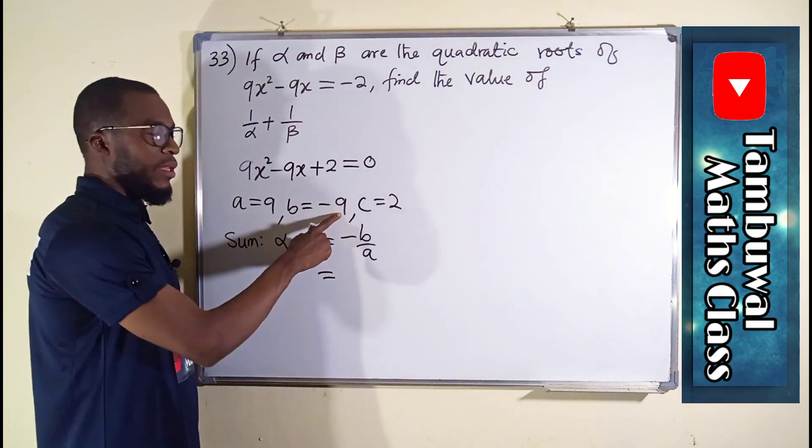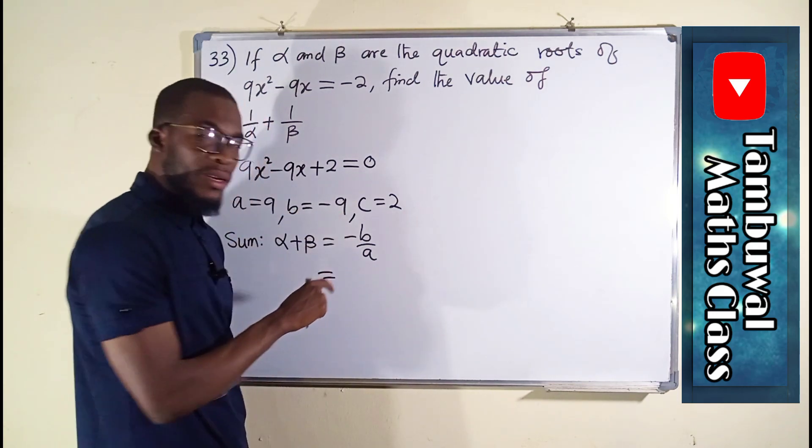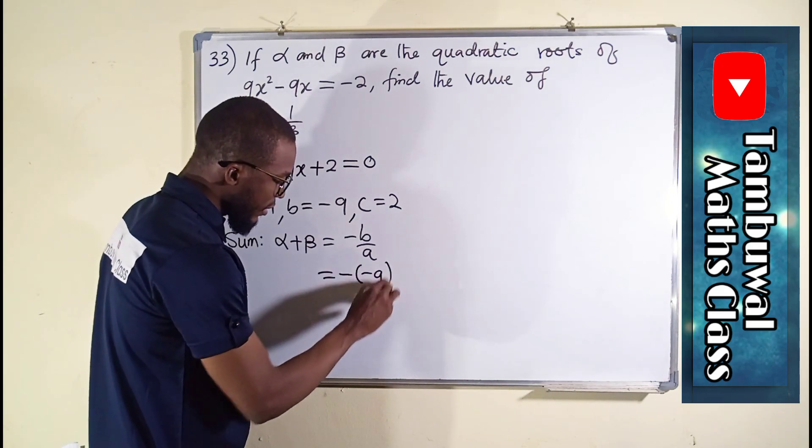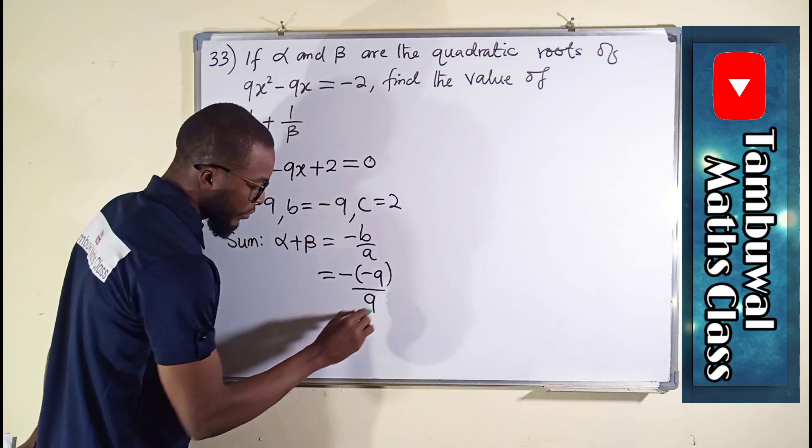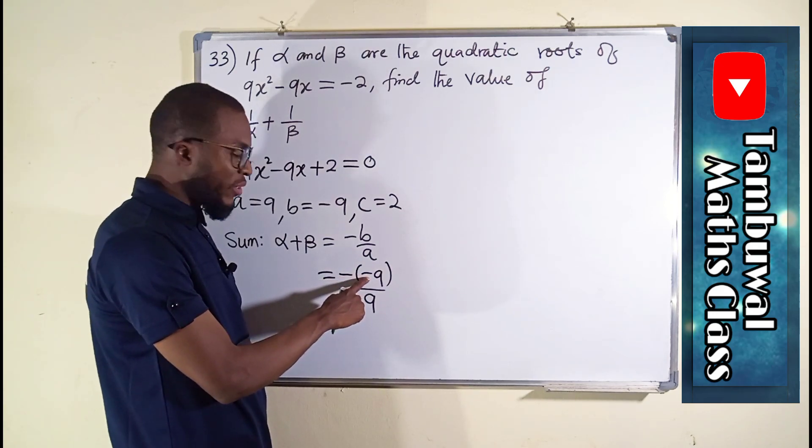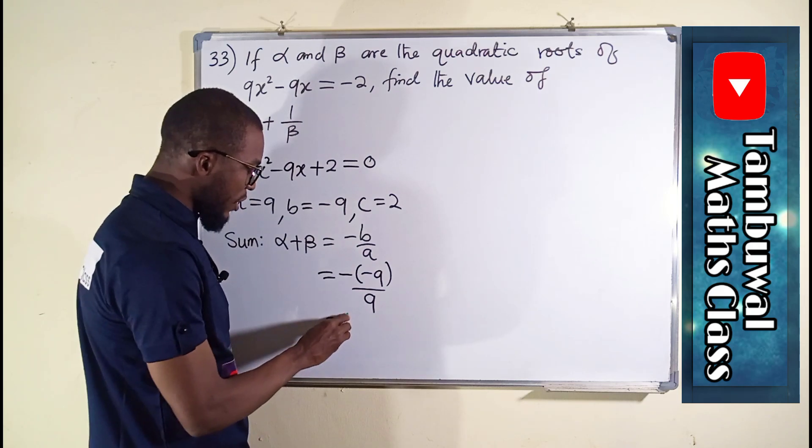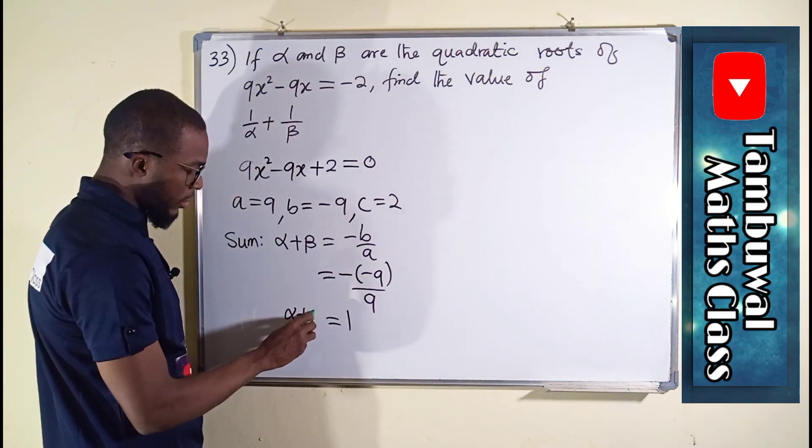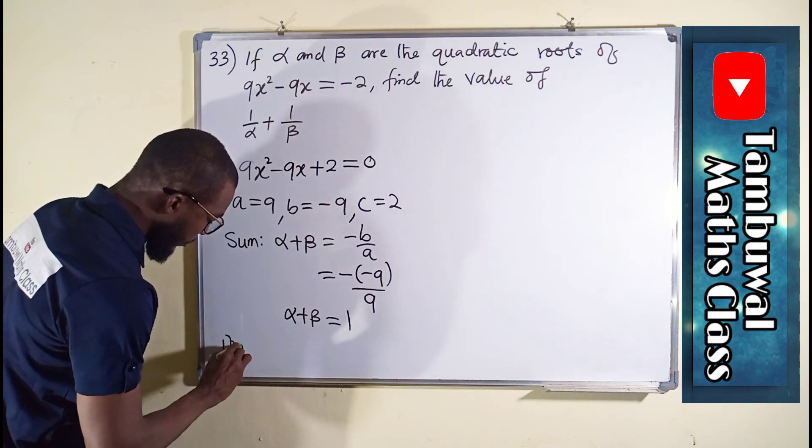And this is equal to what we have here. B is negative 9, but this one has a constant negative, so we have negative negative 9 over A. And A here is 9. Altogether, this negative will change this to positive because negative negative is positive. 9 divided by 9 is 1, so the sum is equal to 1.